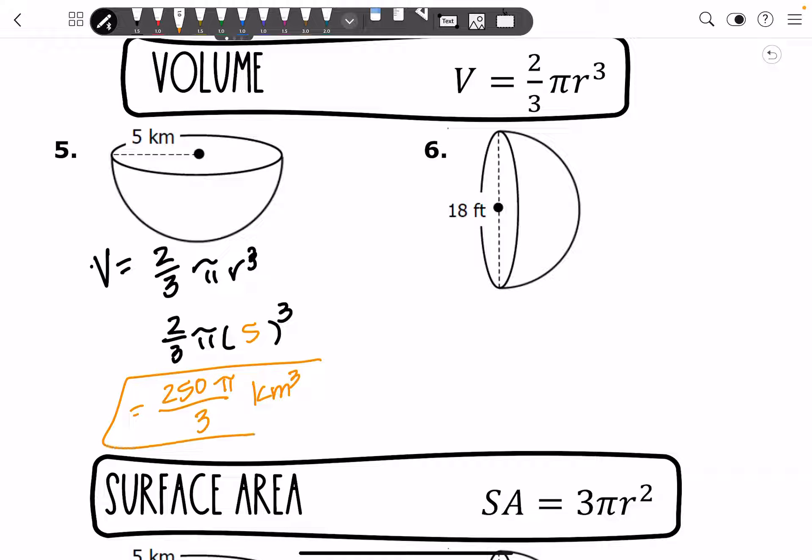Now that's your exact answer. We're also going to need our approximate answer. And I'm going to go ahead and round and I get 261.81 kilometers cubed.